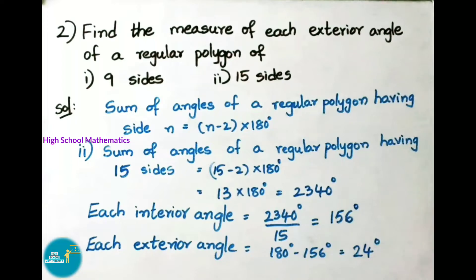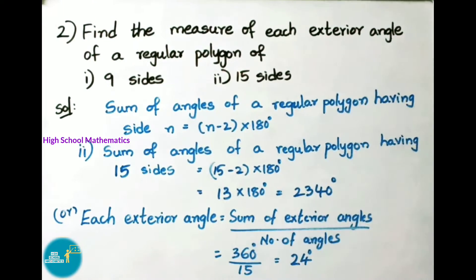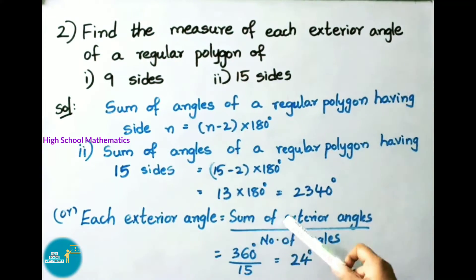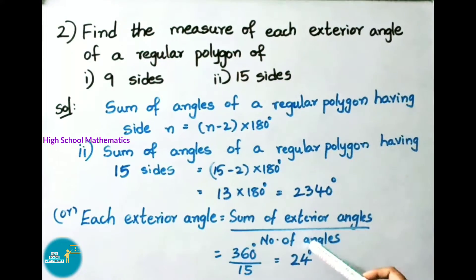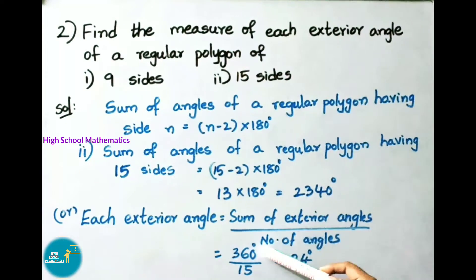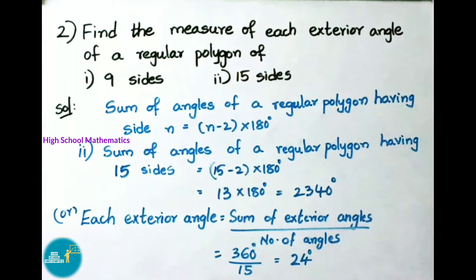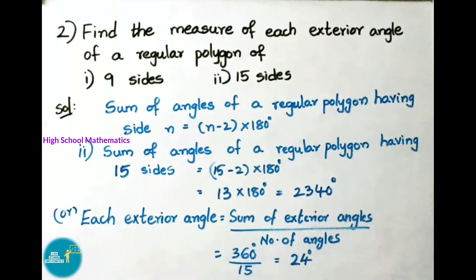We can also find the exterior angle by a second method: each exterior angle equals sum of exterior angles divided by number of angles. The sum of all exterior angles is 360 degrees, divided by 15, giving 360 divided by 15 equals 24 degrees. Therefore each exterior angle is 24 degrees.